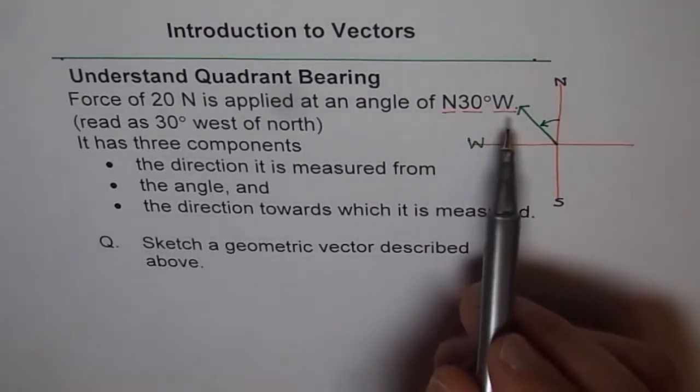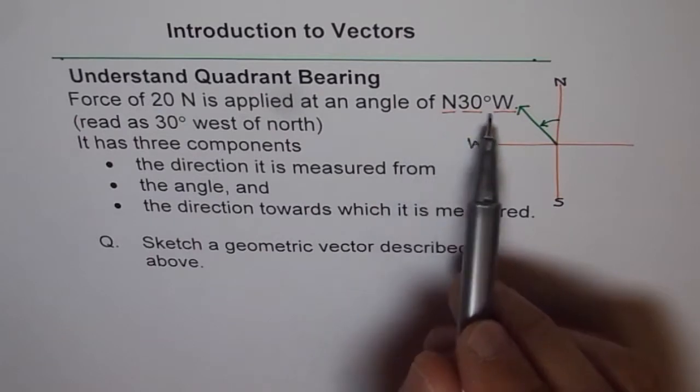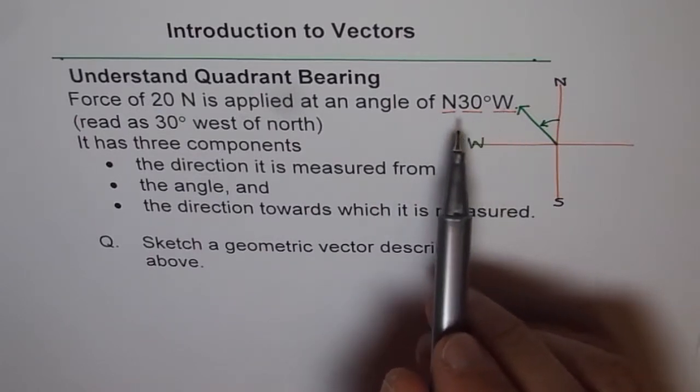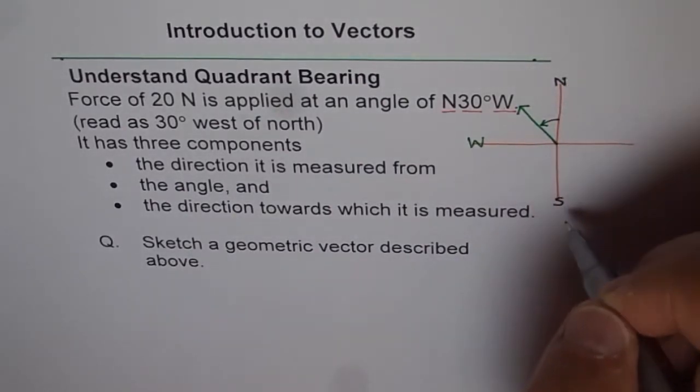When it is represented in quadrant bearing form. Do you understand now? So these are the three components. As you know, quadrant bearing is deviation from north-south line.